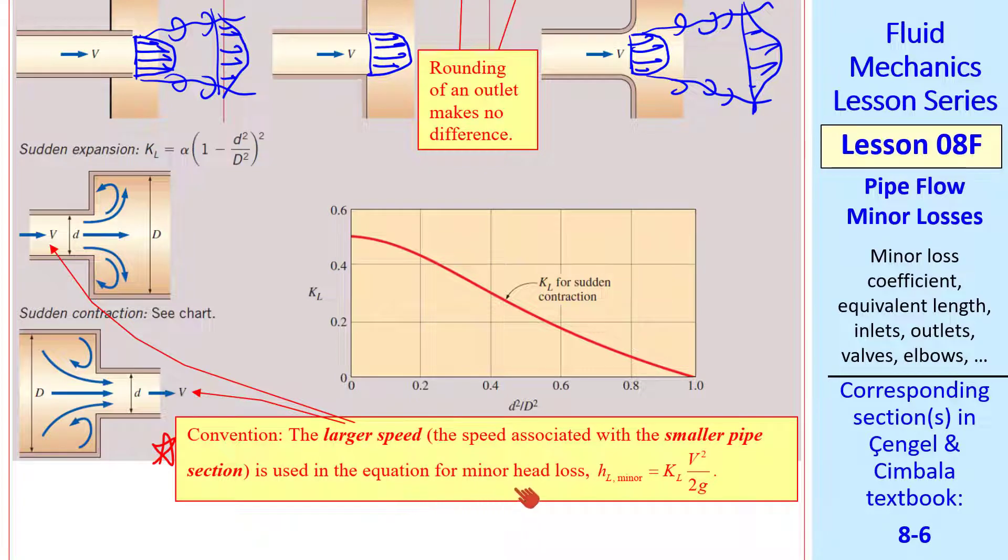Note that by convention, the larger speed, that associated with the smaller pipe section, is used in the equation for minor head loss. This V is the larger V of the two. So for the expansion, we use V1. And for the contraction, we use V2.